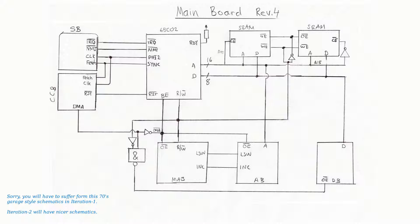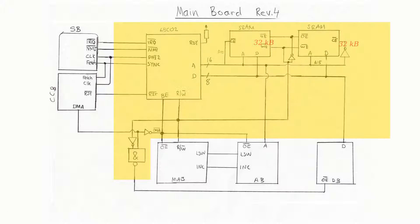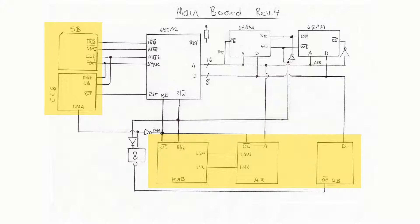Lastly, let's have a quick look at the core of iteration 1 and the key components of the mainboard. This is the schematic of the mainboard in iteration 1. It is very, very simple — it only consists of a 65C02, two 32K SRAMs and some logic. Everything else in iteration 1 is allocated to the user interface boards.